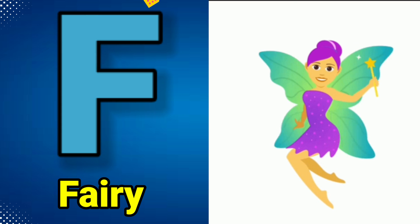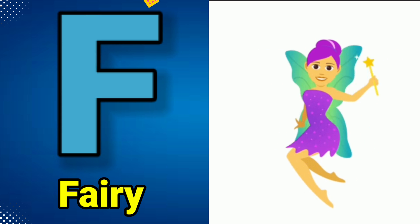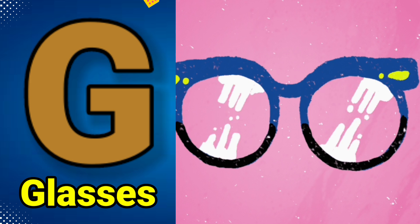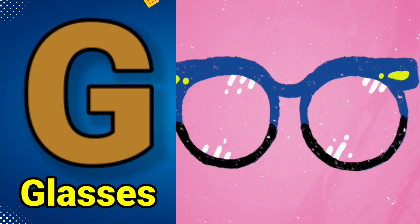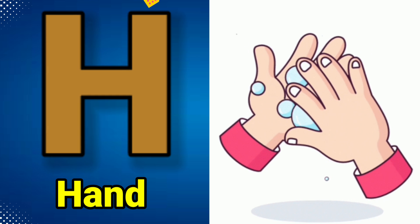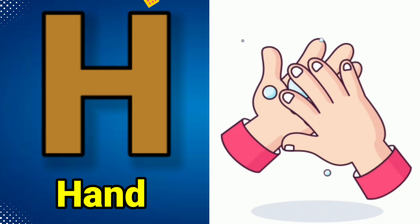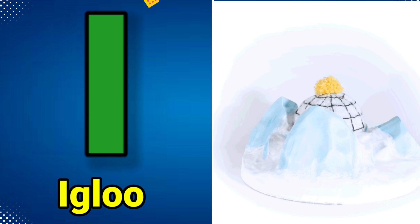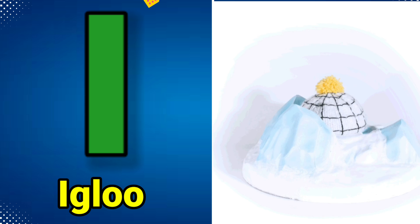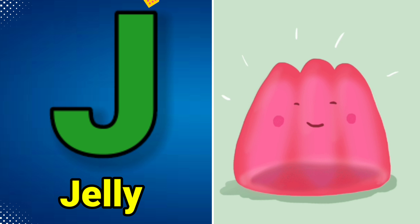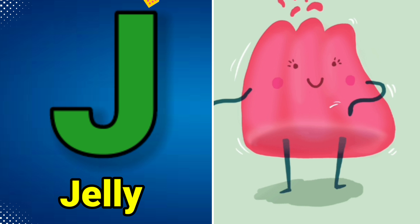F is for Fairy, F-Fairy, F-Fairy. G is for Glasses, G-G-Glasses, G-Glasses. H is for Hand, H-H-Hand, H-Hand. I is for Igloo, I-I-Igloo, I-Igloo. J is for Jelly, J-J-Jelly, J-Jelly.